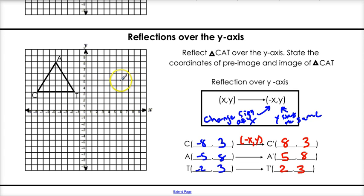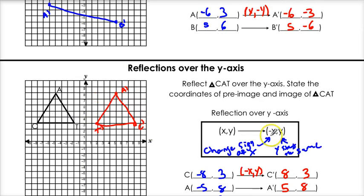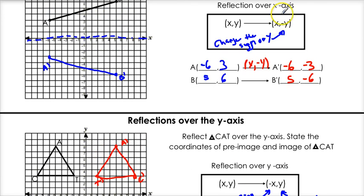So if we reflect this over the y-axis, we get C prime at 8, 3; A prime at 5, 8; and T prime at 2, 3. Look at that — that is our image. You can see C, T, and A each reflect across. My suggestion is to memorize these two rules: reflection over the x-axis gives you (x, negative y); reflection over the y-axis gives you (negative x, y).